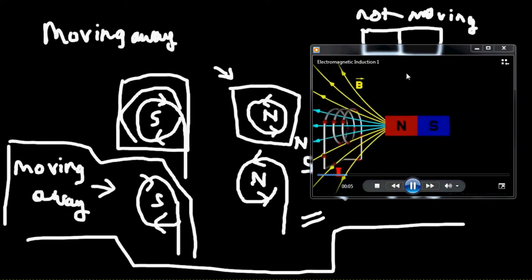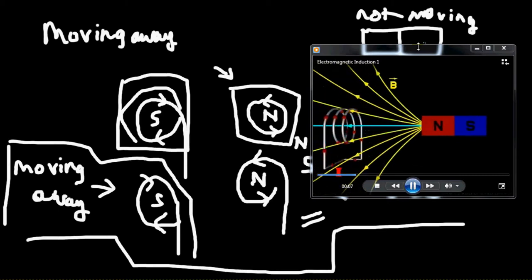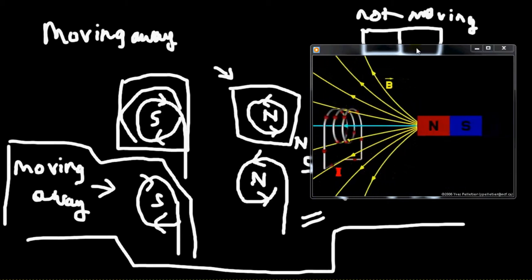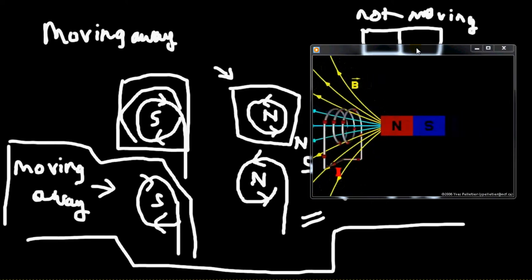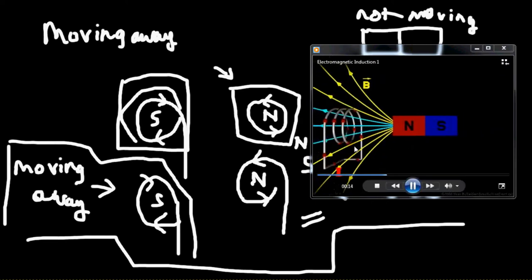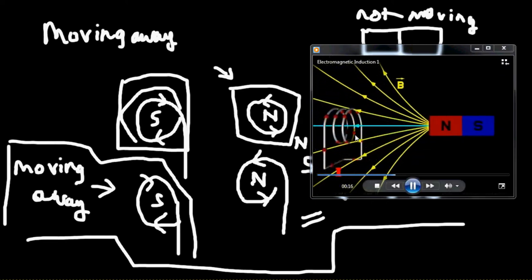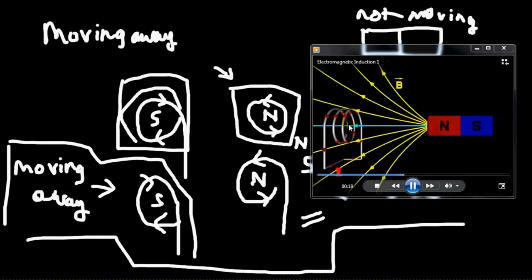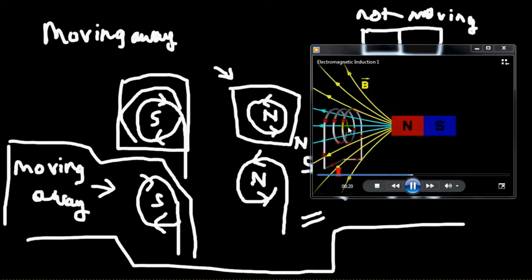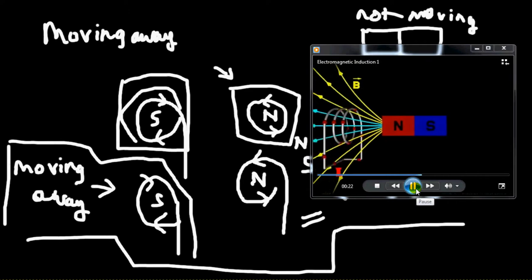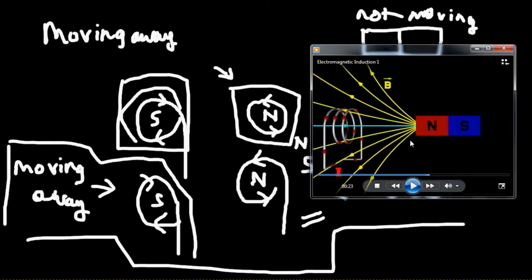So what Faraday said was that whenever there is a change of magnetic flux that is linked with this conductor over here, only then will there be an induced EMF. If say, let's pause it here, now there is only one line that is being cut. Say we just keep the magnet over here and let's not move anything right now.